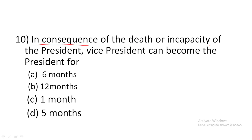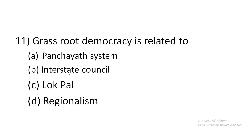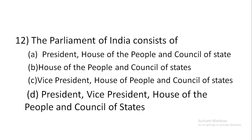Question 10: In consequence of the death or incapacity of the President, the Vice President can become the President for a maximum of — answer is six months. Question 11: Grassroot democracy is related to — answer is Panchayati Raj system.